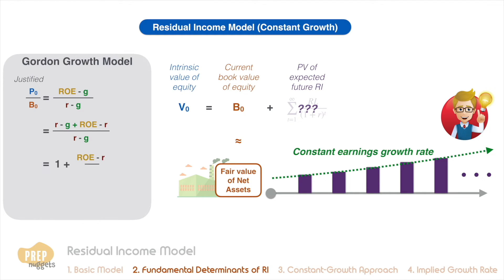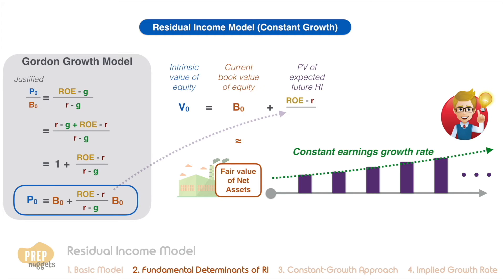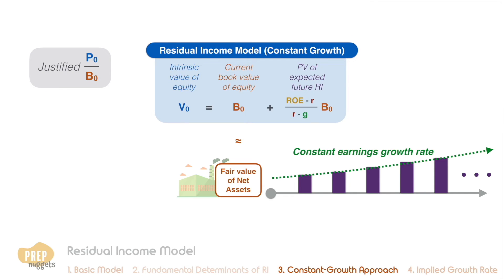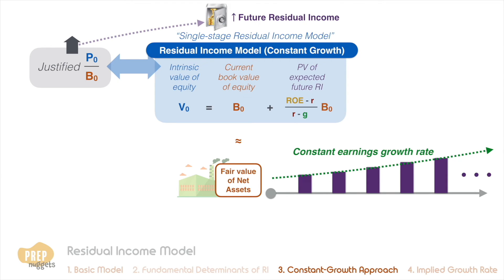Recalling the justified P/B ratio from market-based valuation, we can show this is mathematically equivalent to the intrinsic value expression from the fundamental residual income model. This expression tells us that the earnings growth rate is an important determinant of a stock's valuation. More importantly, ROE is the primary determinant of residual income — when ROE is higher than the required return, the firm is making economic profit. The constant growth residual income model, also known as the single-stage residual income model, is closely related to the justified P/B ratio.